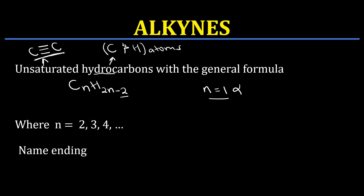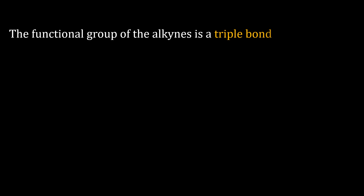When you look at alkynes, just like alkenes and alkanes, they also have a unique name ending. Alkynes will have a name ending of '-yne', so all alkynes will end with Y-N-E, as we are going to see. Alkynes will have a triple bond, and this will be the functional group. Once you have a compound that contains a triple bond between carbon atoms, it will always be an alkyne.